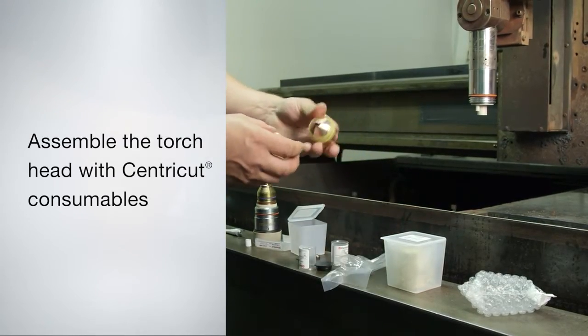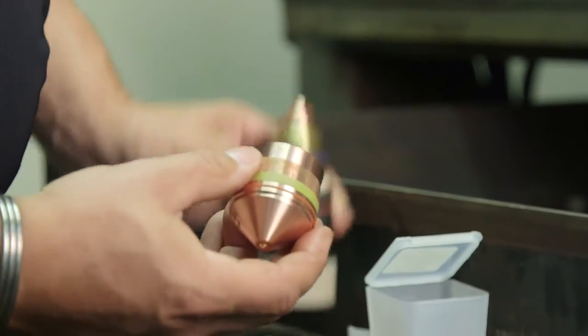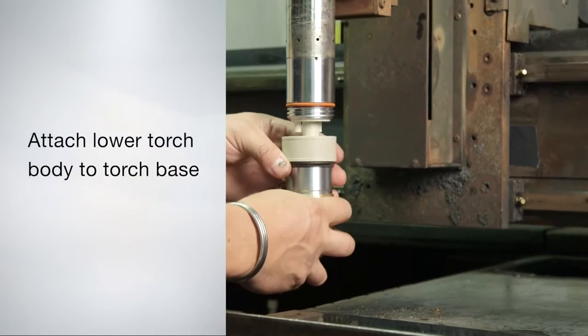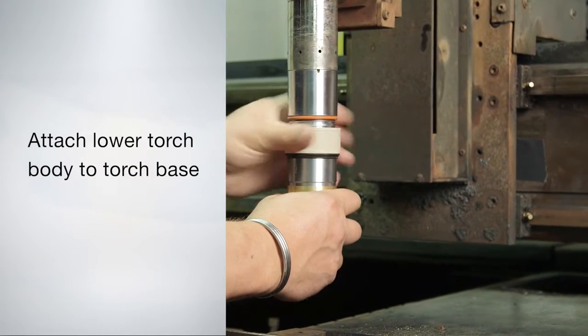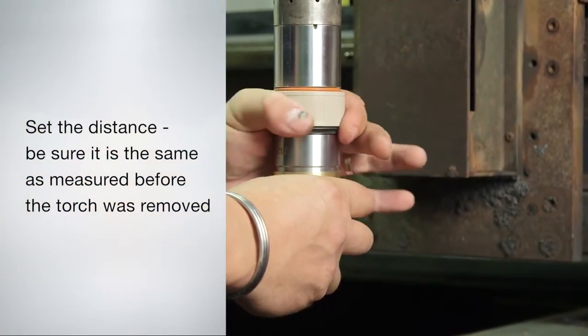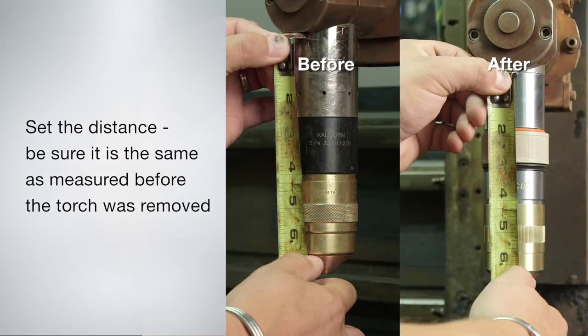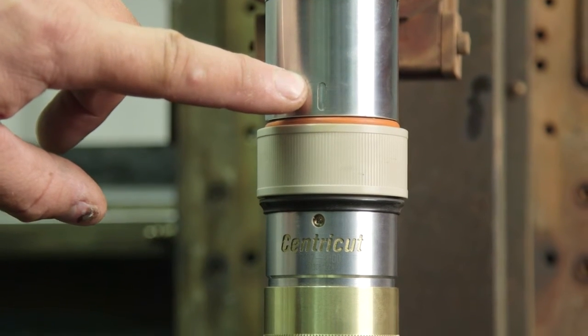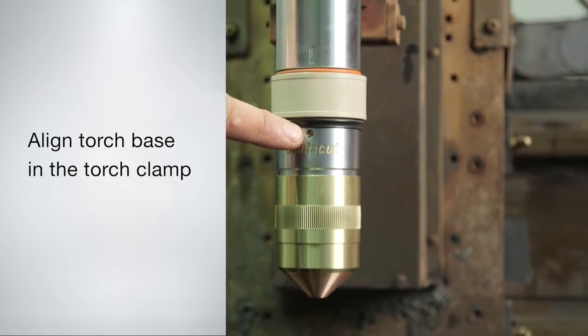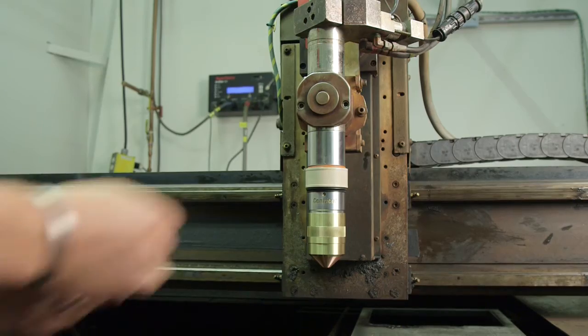Assemble the torch head with CenterCut consumables for Caliburn systems. Now attach the lower torch body to the torch base assembly and tighten the retaining ring. Set the distance from the base of the torch clamp to the front of the brass retaining cap. Be sure that this is the same distance as measured before the torch was removed. In order to easily mount the torch head to the base once installed, align the torch base in the torch clamp with the aligning mark facing forward. Tighten the torch clamp.